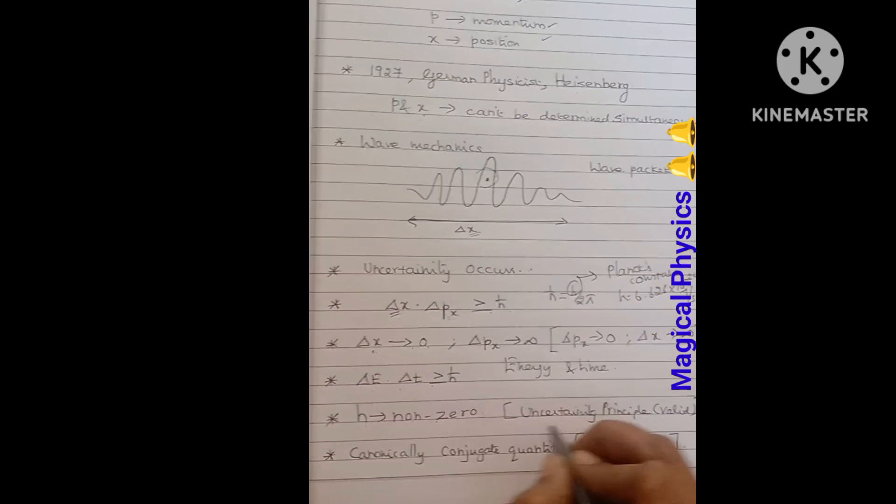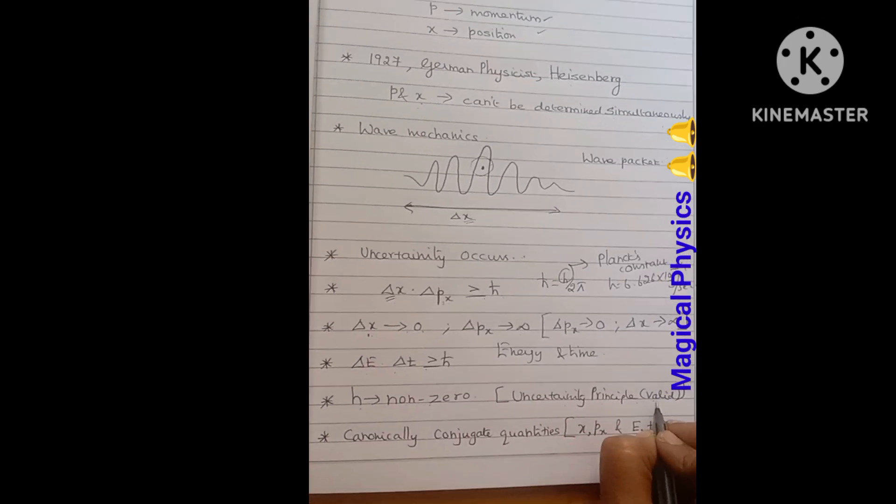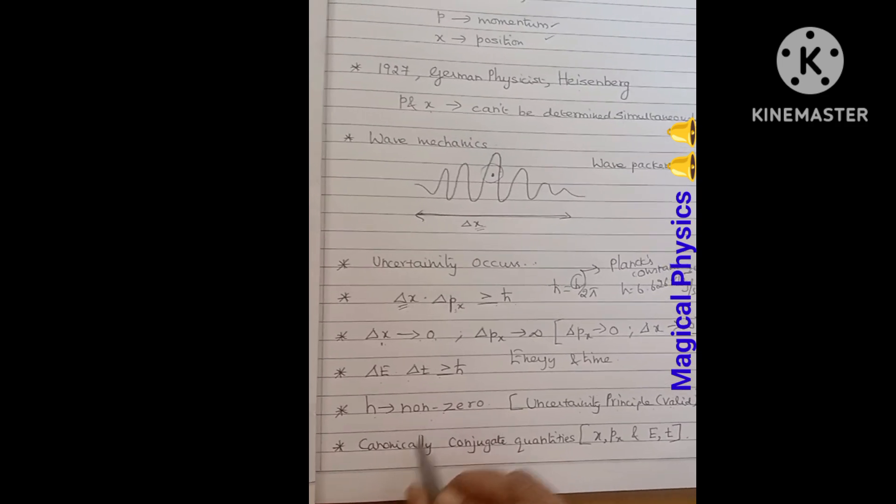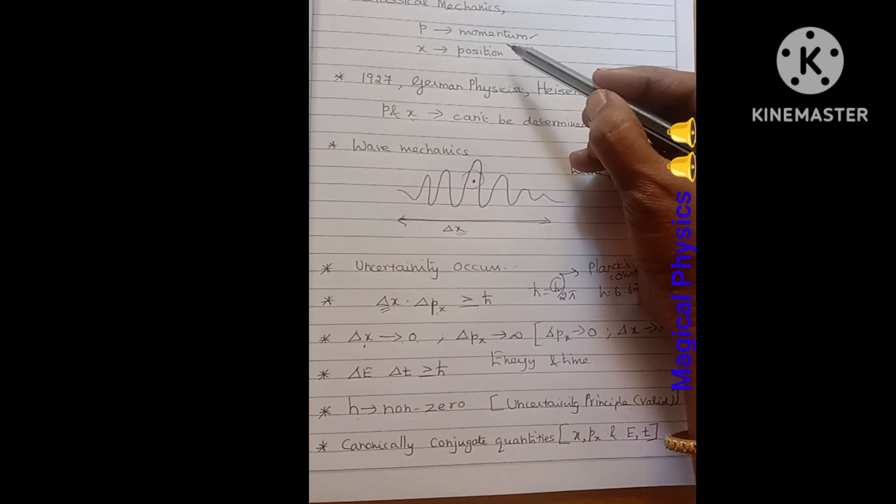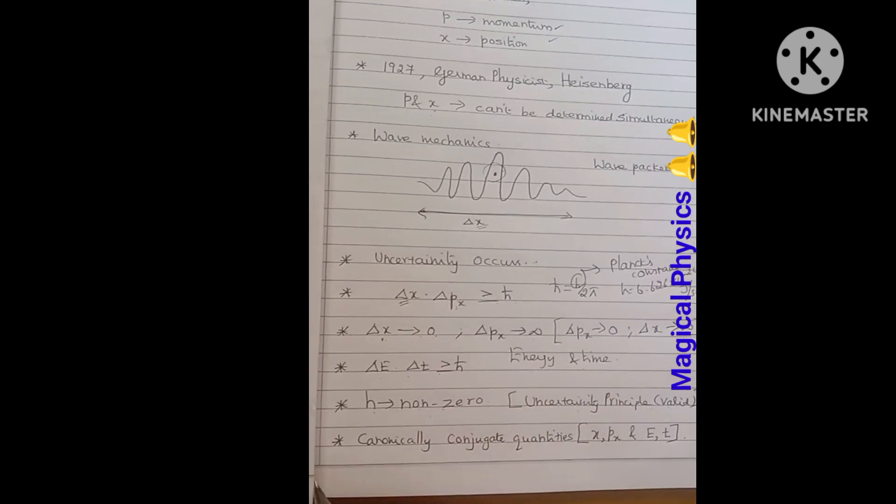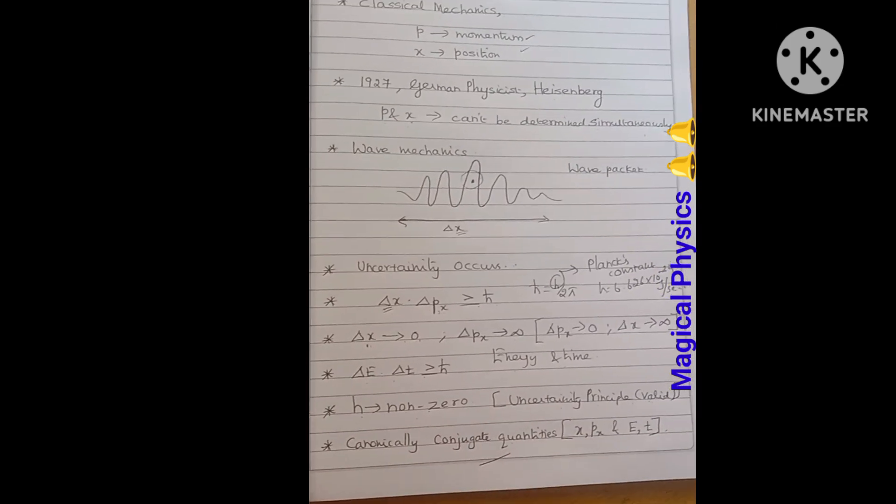At this condition, this uncertainty principle will be valid always, since it is a non-zero quantity. As I have represented, position and momentum, then energy and time, these are all said to be canonically conjugate quantities. Thank you.